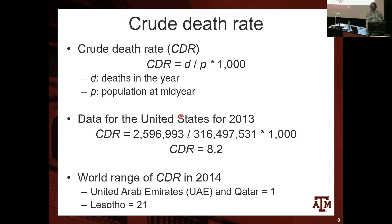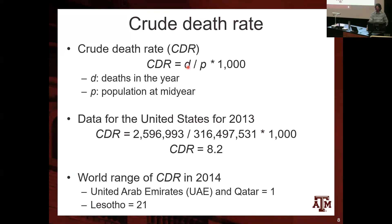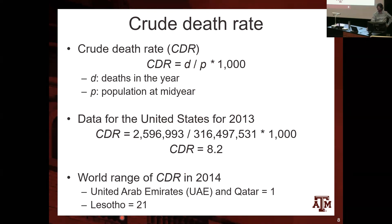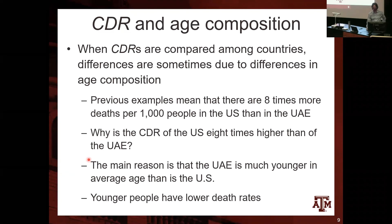The easiest way to calculate mortality rates is the crude death rate: the overall number of deaths in a year in a specific population divided by the population in the middle of that year, multiplied by 1,000. In the US, the crude death rate back in 2013 was 8.2 deaths per 1,000 people. In the world, the crude death rate varies from 1 in the United Arab Emirates and Qatar to 21 in Lesotho — showing a lot of variation, with the US in between.